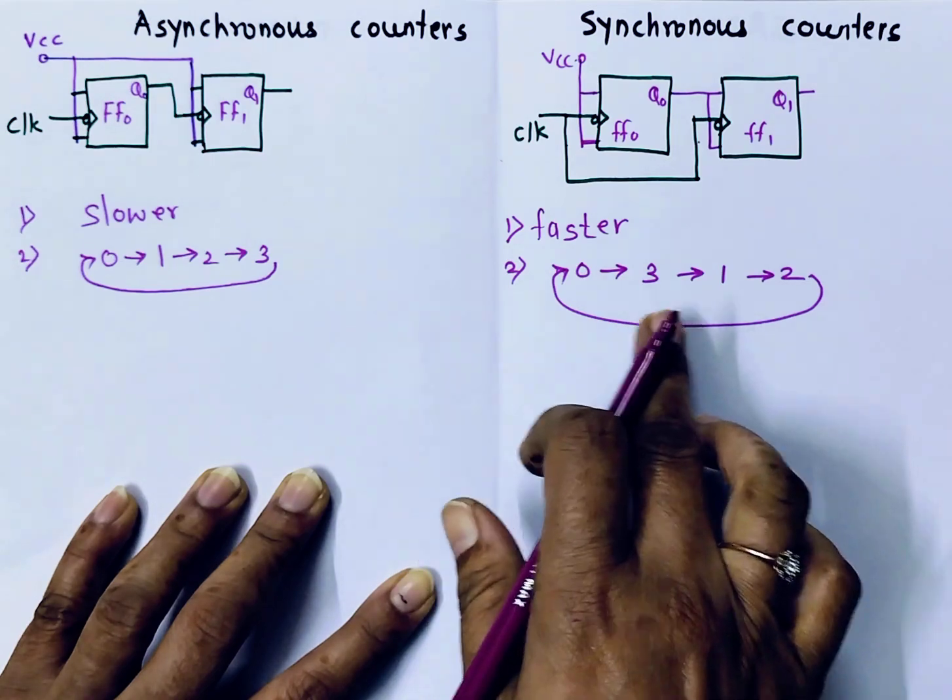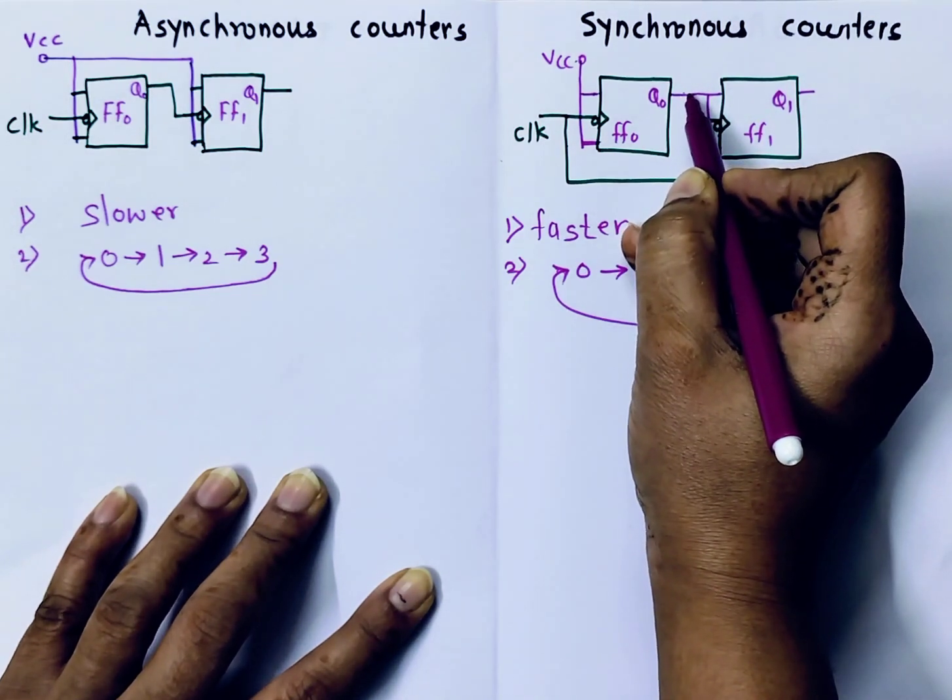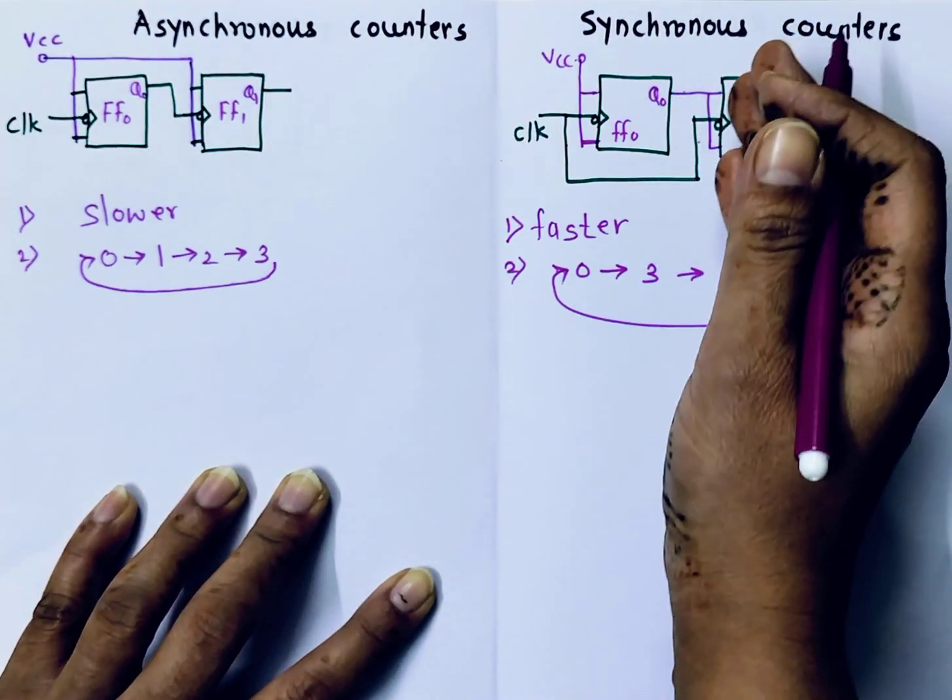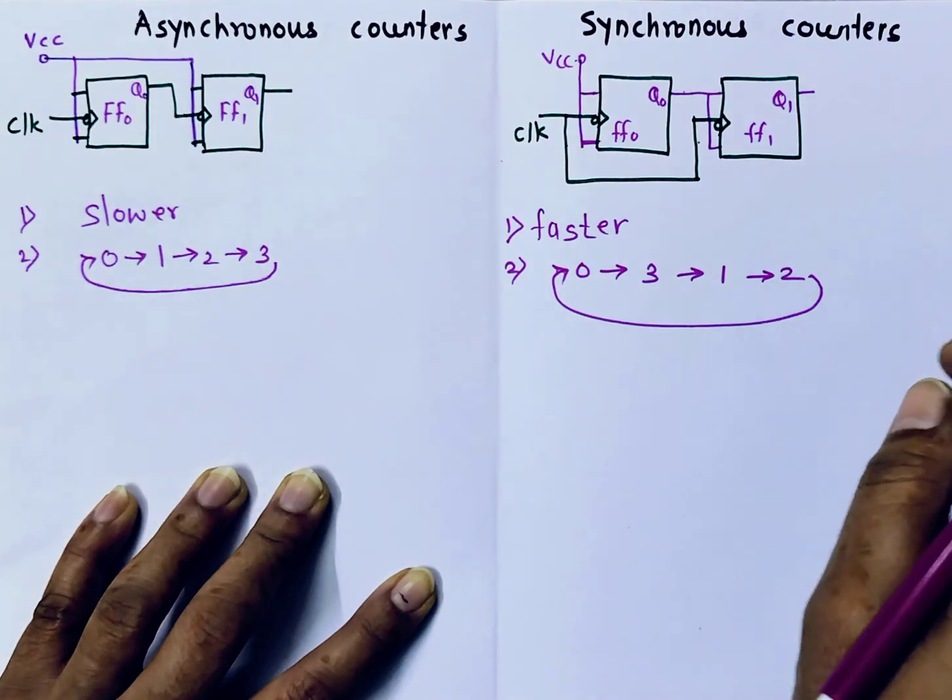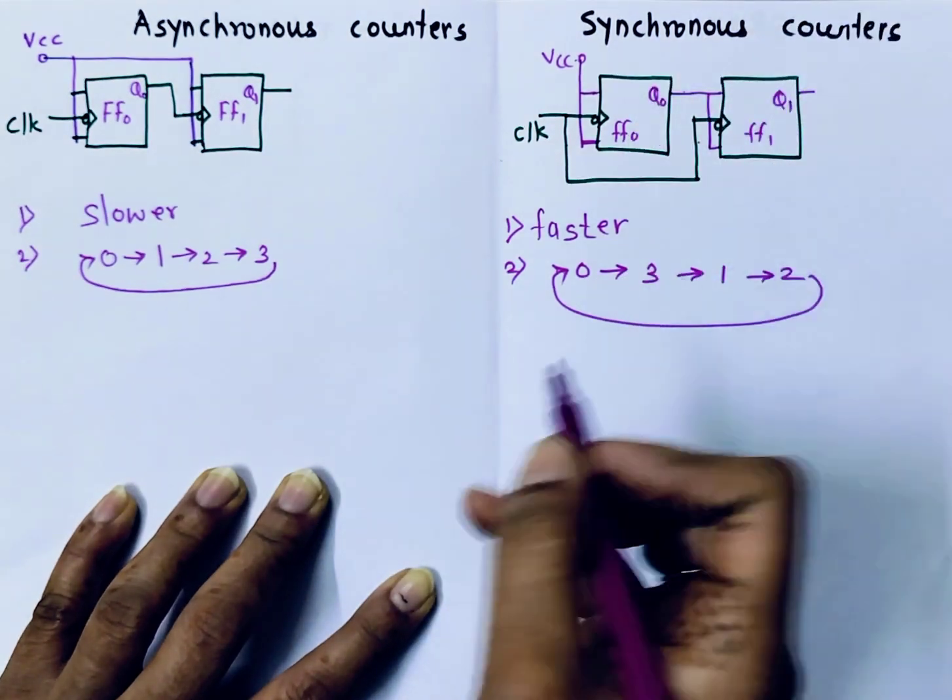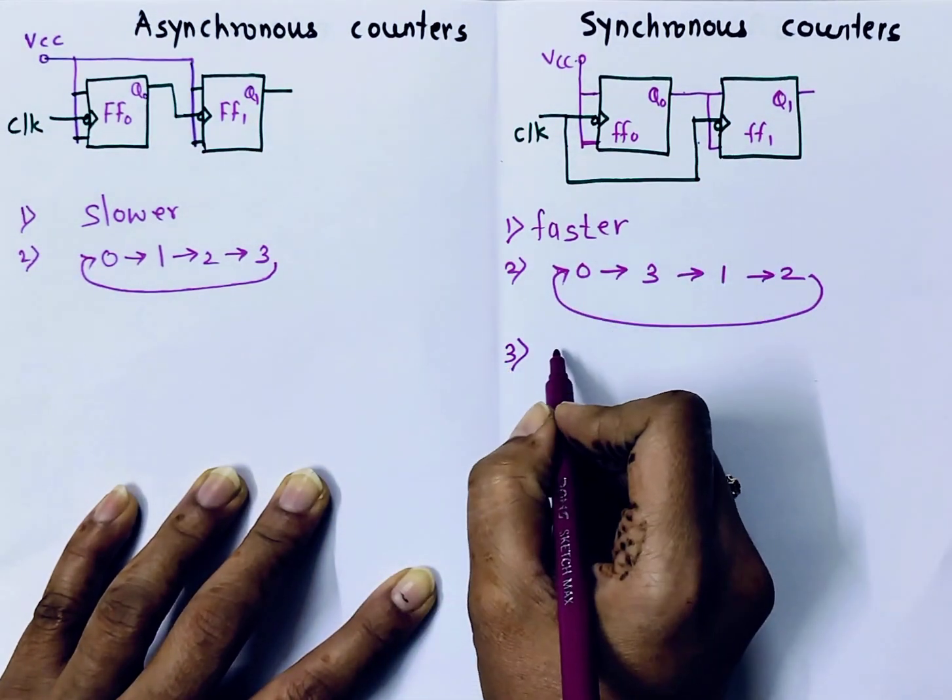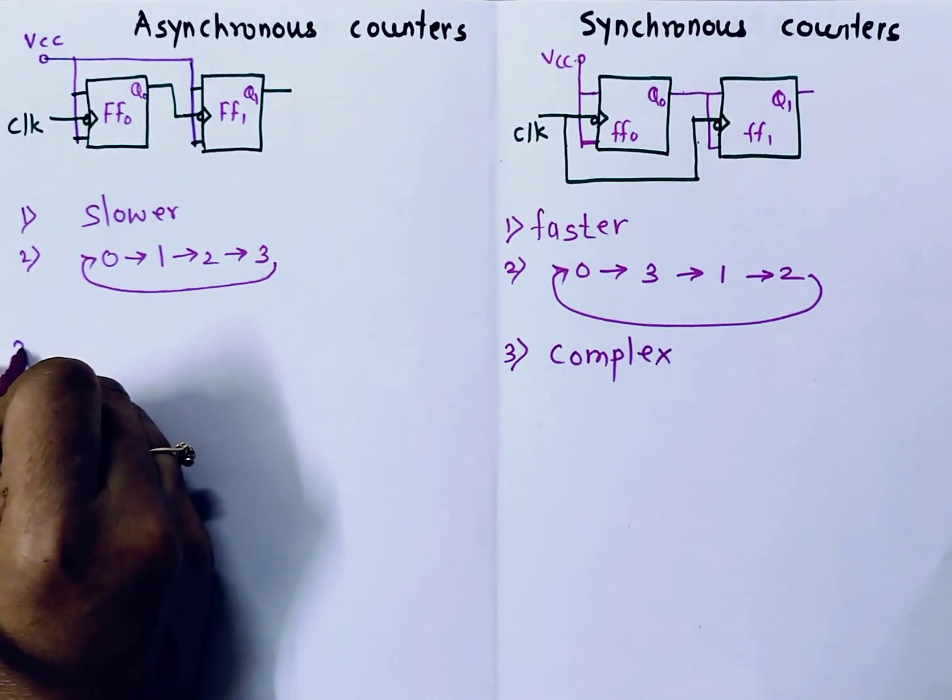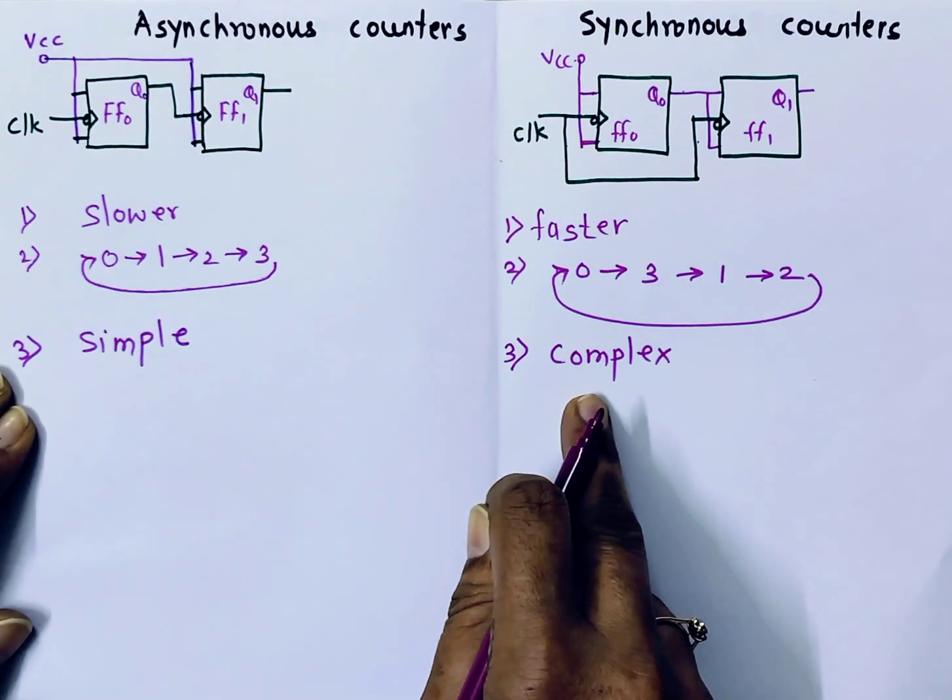But when it is generating output in any sequence, it means we need to add something here, add to the input of flip-flop. We need to add AND gates or OR gates or some gates to make sequence not in ascending order or not in sequence. For that, we need to add something. It means the structure becomes complex. Synchronous counters are complex as compared to Asynchronous counters. Asynchronous counters are simple and Synchronous counters are complex.